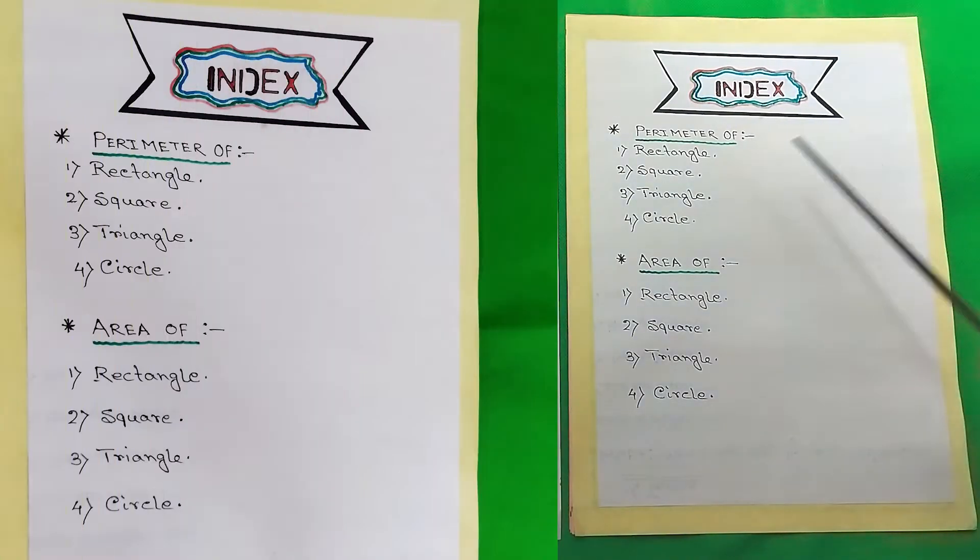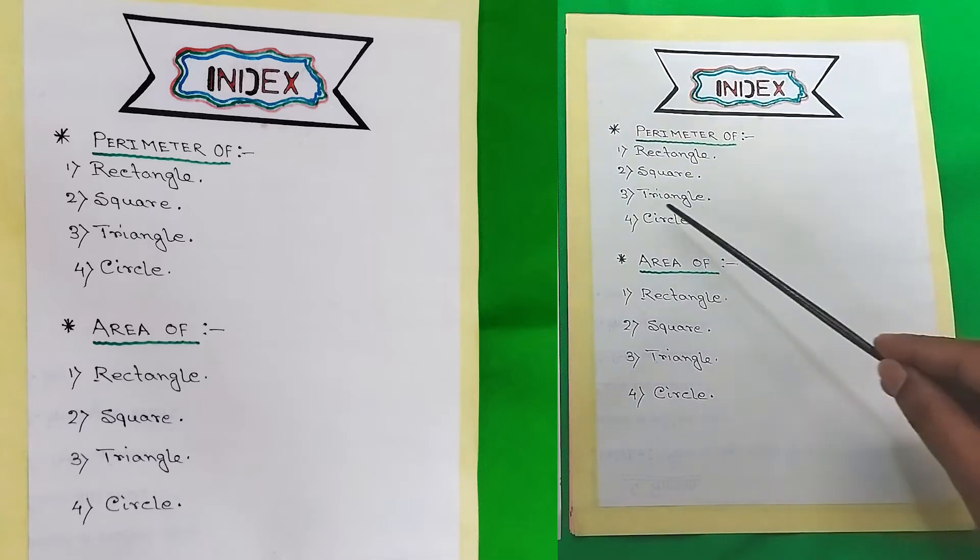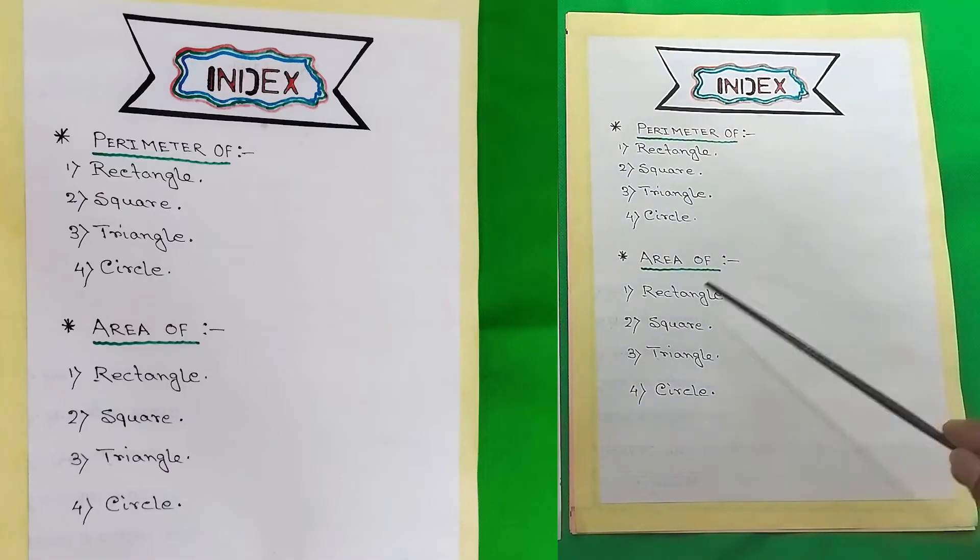So the next page is the index. In the index we first have the perimeter of rectangle, square, triangle and circle and then we have the area of rectangle, square, triangle and circle.